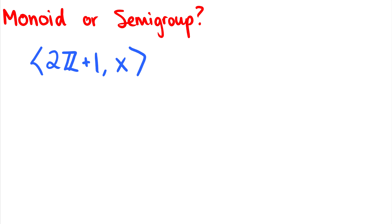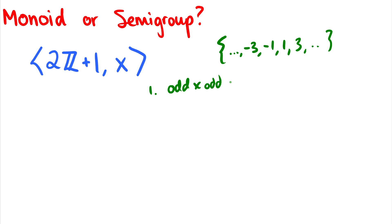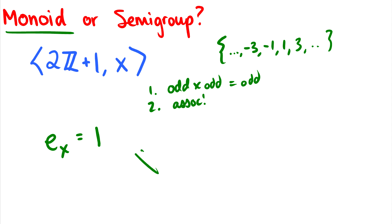What about 2ℤ+1 under multiplication? The set 2ℤ+1 is the odd integers: ..., negative 3, negative 1, 1, 3, ... First, is it closed? An odd times an odd gives an odd, so it's closed. Second, multiplication is definitely associative. Third, what is the identity? The identity for multiplication is 1, and 1 is in the set of odd integers. Therefore it is closed, associative, and has an identity, so it is a monoid.